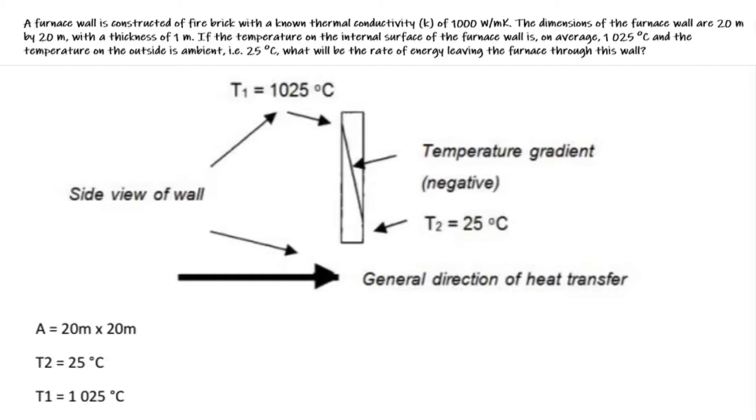We are told that a furnace wall is constructed of fire brick with a known thermal conductivity K of 1000 Watt per meter Kelvin. The dimensions of the furnace wall are 20 by 20 meters with a thickness of 1 meter. If the temperature on the internal surface of the wall is on average 1025 degrees Celsius and the temperature on the outside is ambient at 25 degrees, what will be the rate of energy leaving the furnace through this wall?